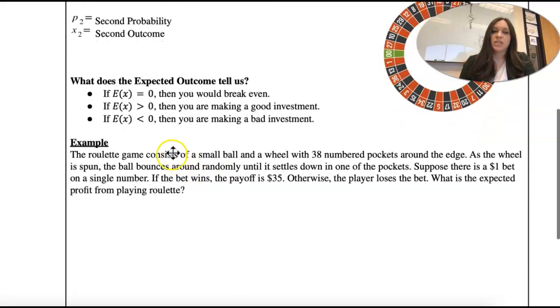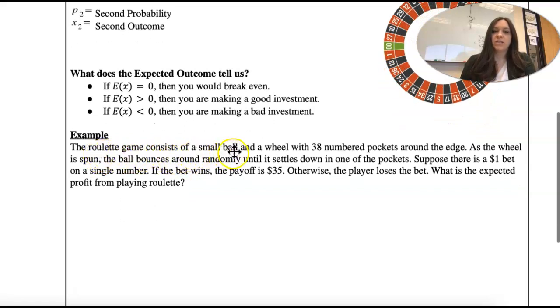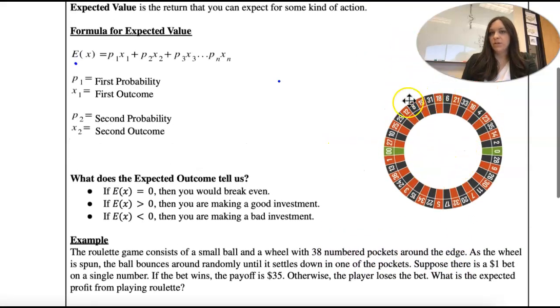Okay, so our example is we have a roulette game that consists of a small ball and a wheel with 38 numbered pockets around the edge. So this is a roulette wheel. This picture, you put the ball in, it spins with the ball, and it's going to land on one of these numbers. So there's 38. It's 1 through 36, and then we have a double zero and a zero. Those are the extra two.